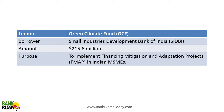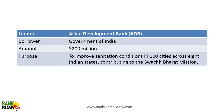Green Climate Fund (GCF) — the borrower is SIDBI — loan amount is 15.6 million dollars — the purpose is to implement financing, mitigation, and adaptation projects in Indian MSMEs. ADB — the borrower is Government of India — 200 million dollars — the goal is to improve sanitation conditions in 100 cities across 8 Indian states, contributing to the Swachh Bharat Mission.